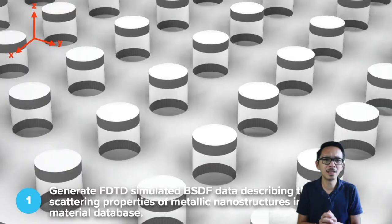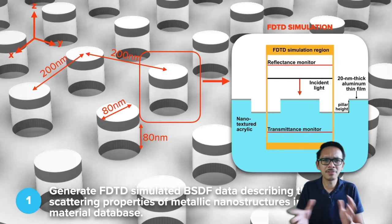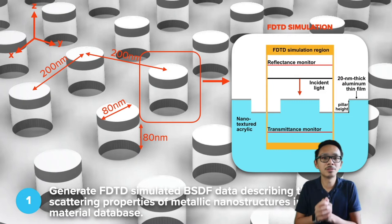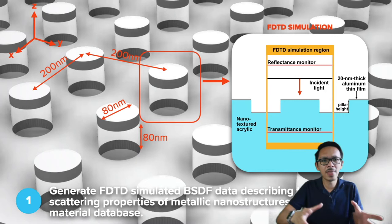This is a schematic diagram for the nano hole and disc array that we use for the FDTD simulations. For the FDTD simulation, we run multiple simulations from 0 to 85 degrees, because we want to capture the scattering effects from different angles. We then produce the BSDF file that can be used for wave tracing rendering.